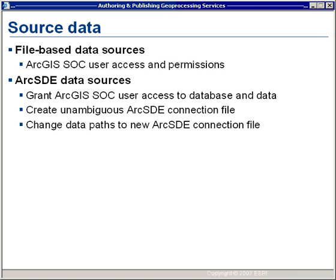If you're using an ArcSDE data source, you also need to make sure the ArcGIS SOC user has access to the database and to the data within it. You also need to make sure the process can connect to your SDE database by creating an unambiguous ArcSDE connection file. Once you have your connection file, you'll also need to make sure you change data paths to use this new ArcSDE connection file.